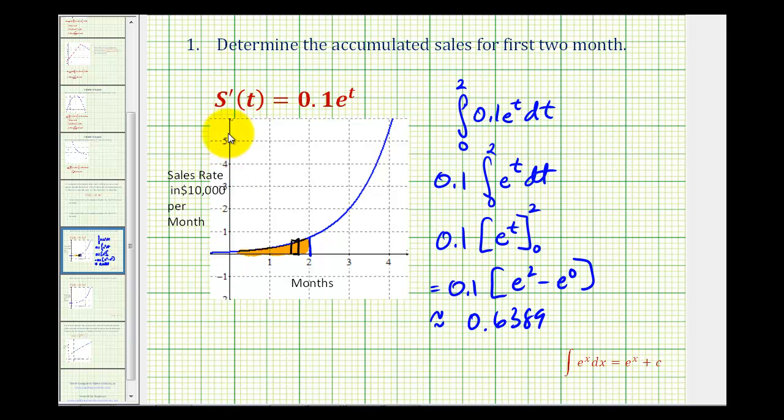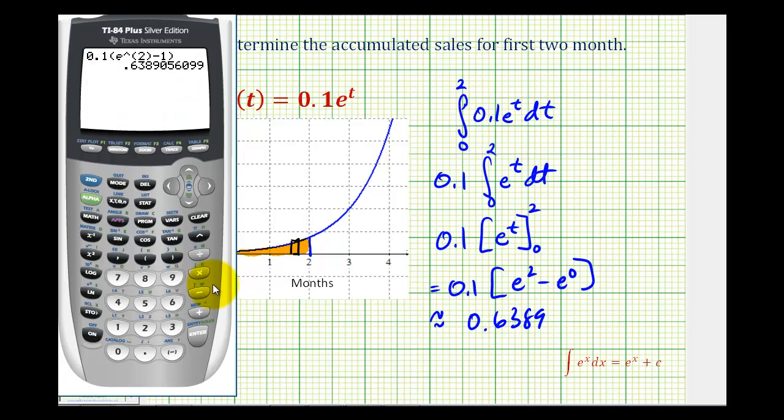But remember, the scale on the y-axis is by ten thousands, so to determine the accumulated sales, we'll have to multiply this by ten thousand. So if we round to the nearest penny, this would be $6,389.06.